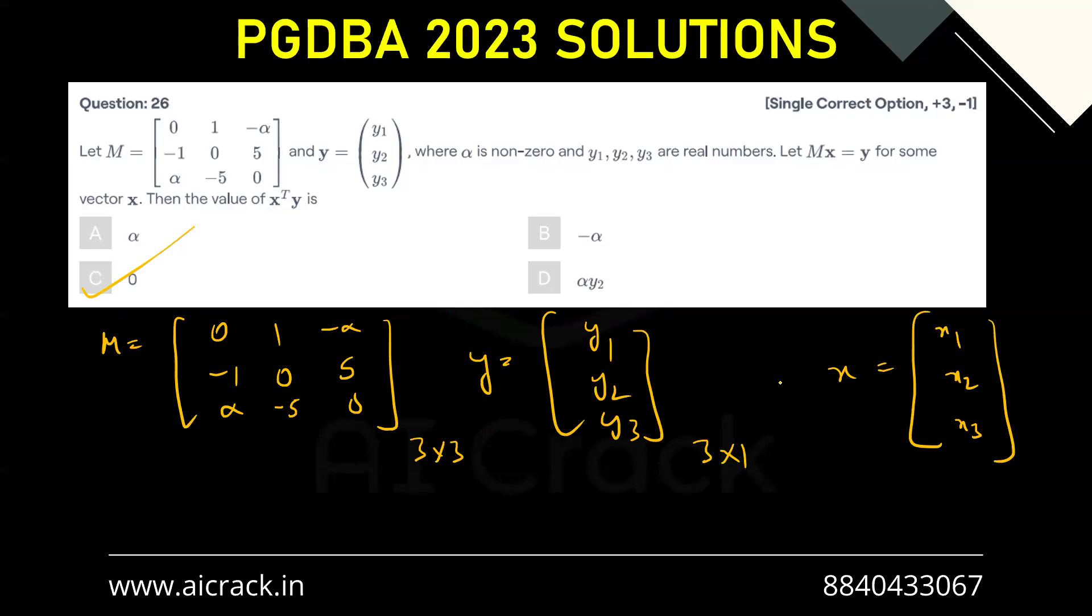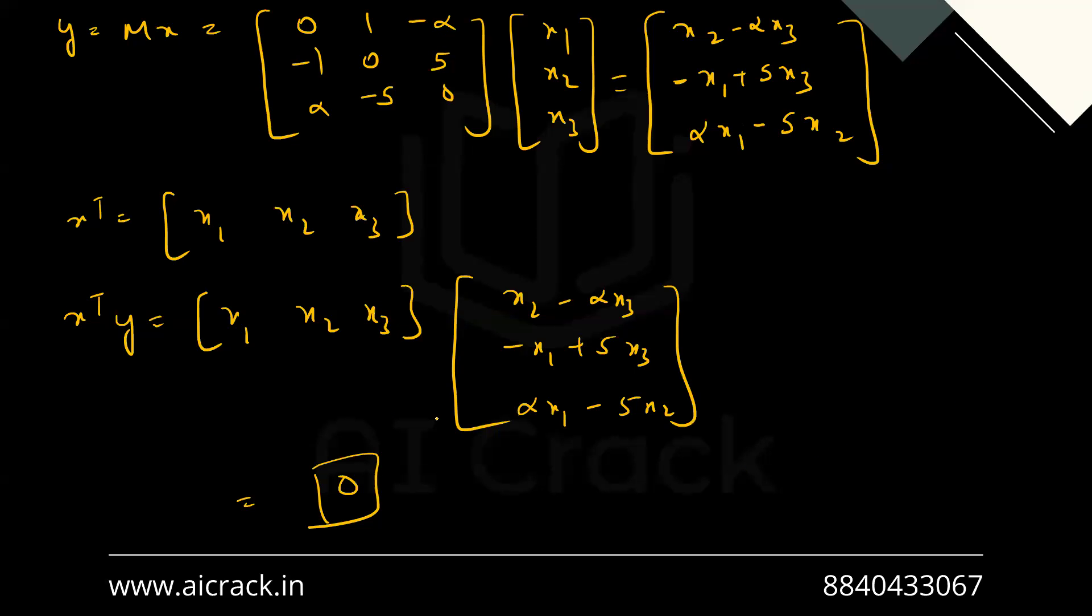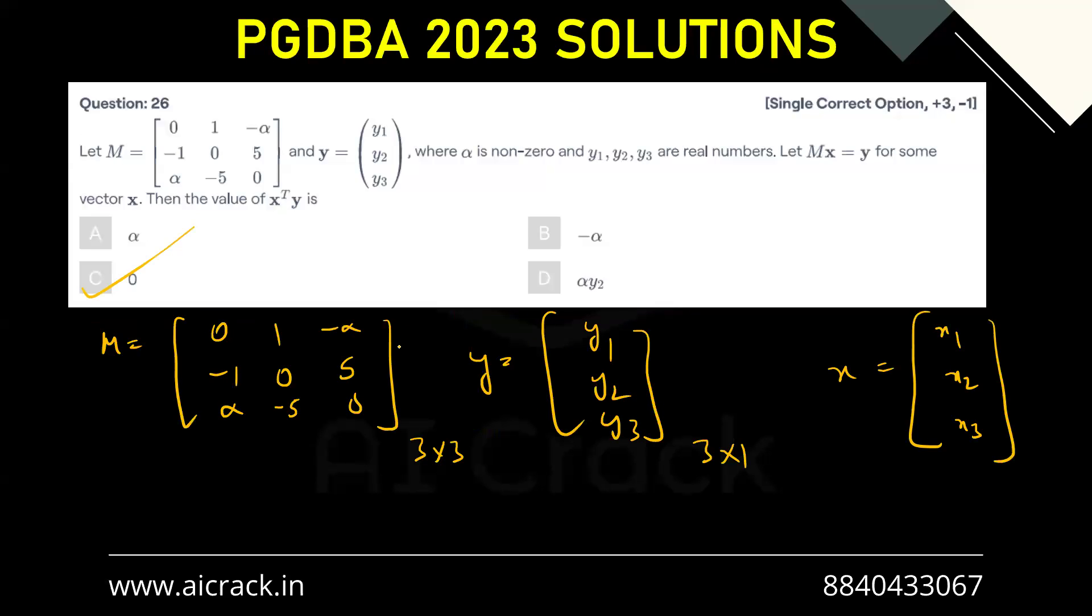So it was nothing but just a calculation-based question. You have to assume X1, X2, X3 based on dimensions, and then you have to just multiply it and you'll get the answer of 0.